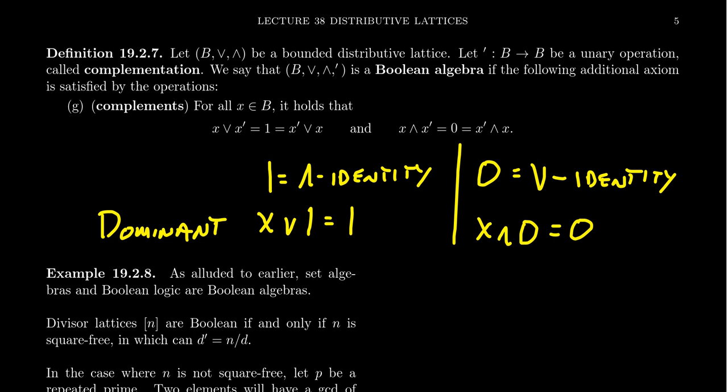The identities of a bounded lattice are identities with respect to their own operations, but they are dominant elements with regard to the other direction. X join 1 always gives back 1, and X meet 0 is always equal to 0. This is not something we ever see in groups — there's no such thing as a dominant element in a group. But in rings, 0 is a dominant element with regard to multiplication, which is a consequence of the distributive property. In a distributive lattice, distribution goes in both directions, so both identities must be dominant with respect to the other operation.